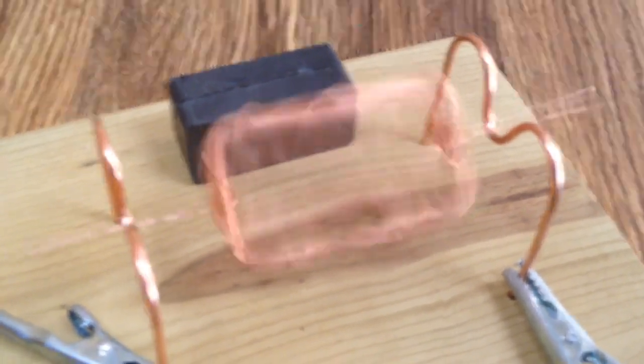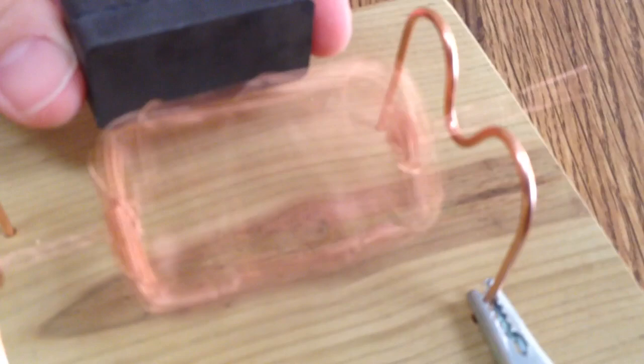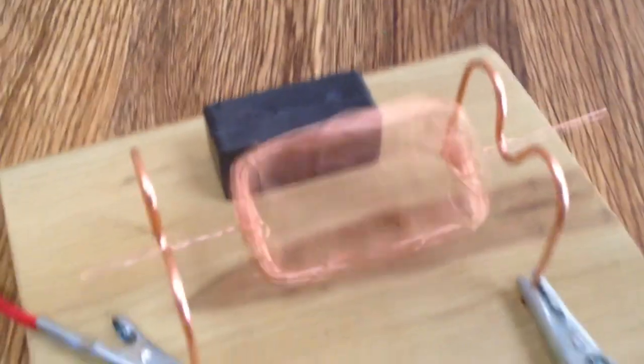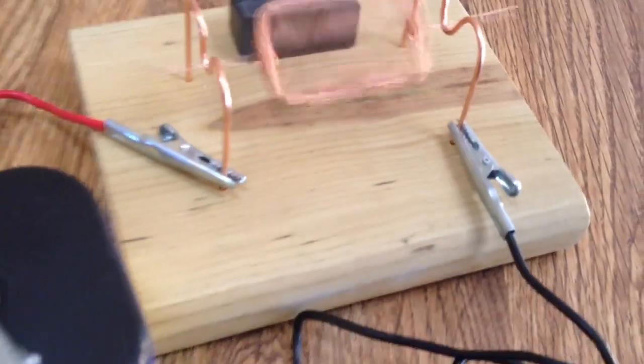So there's our motor in action. We can take the magnet and depending on where you hold the magnet and how close you hold it you'll get more force and more speed. So there you have it. A simple DC motor.